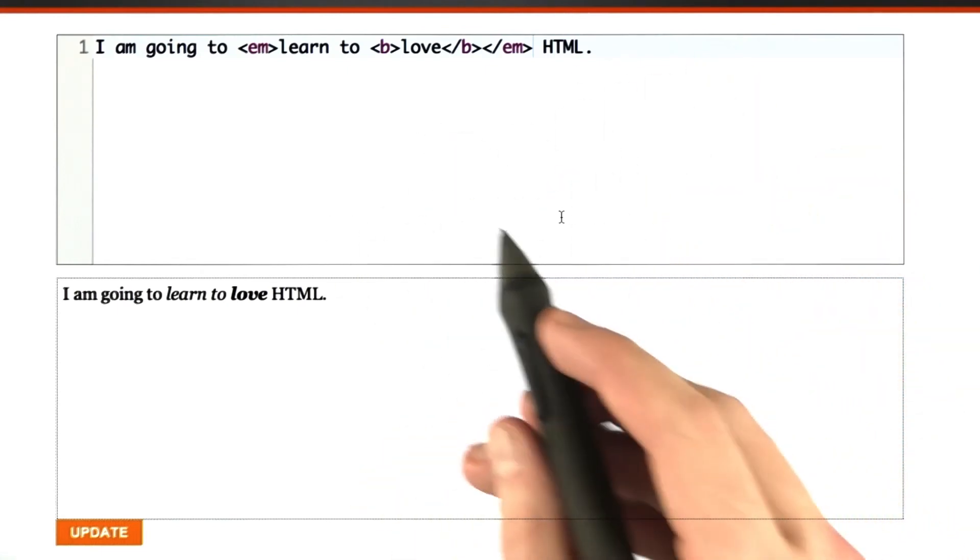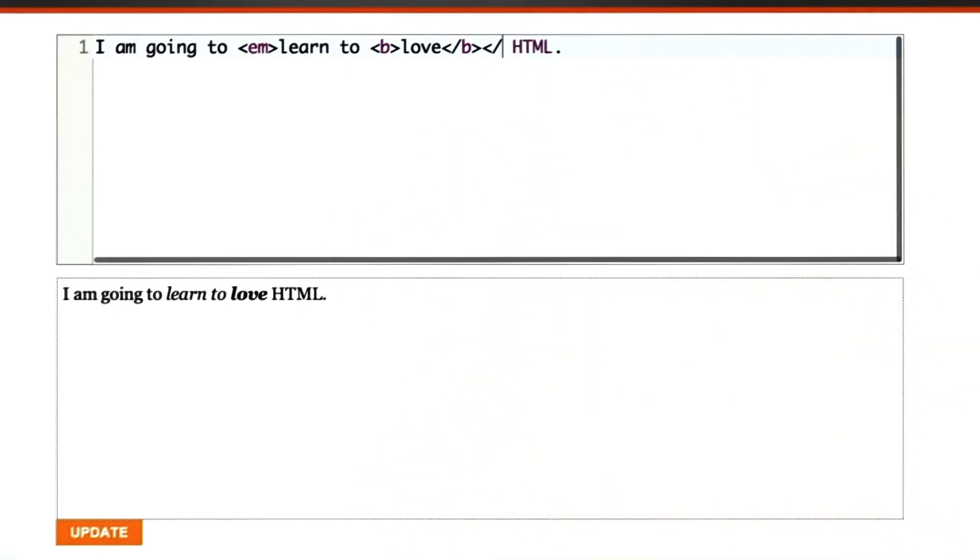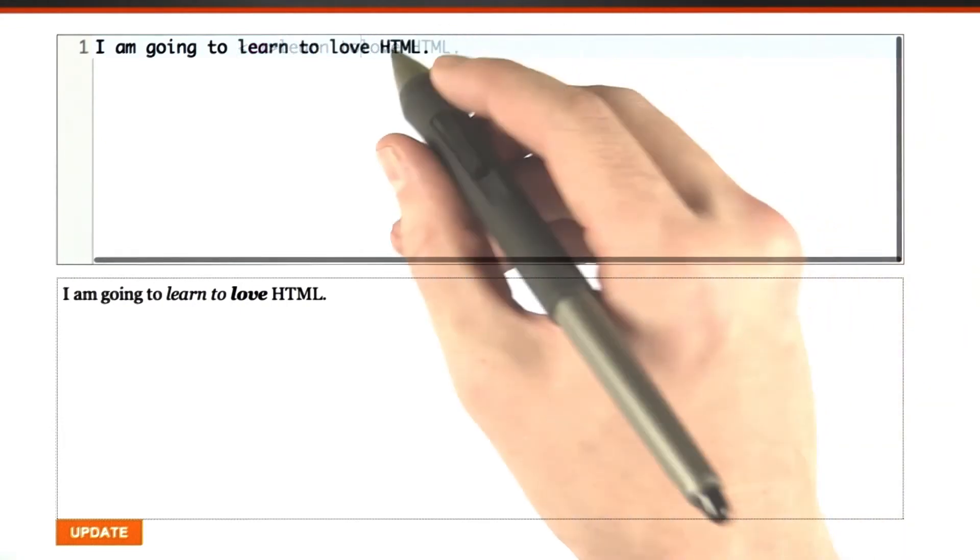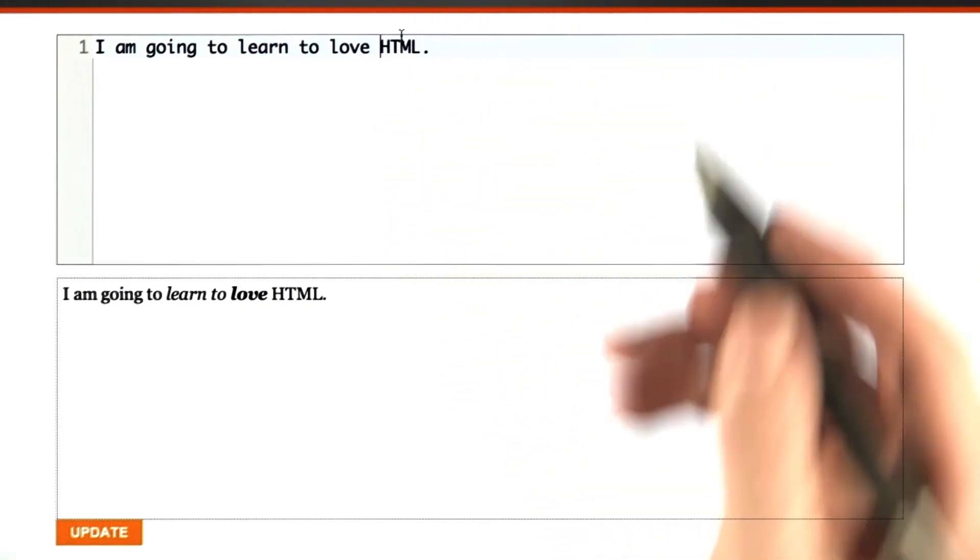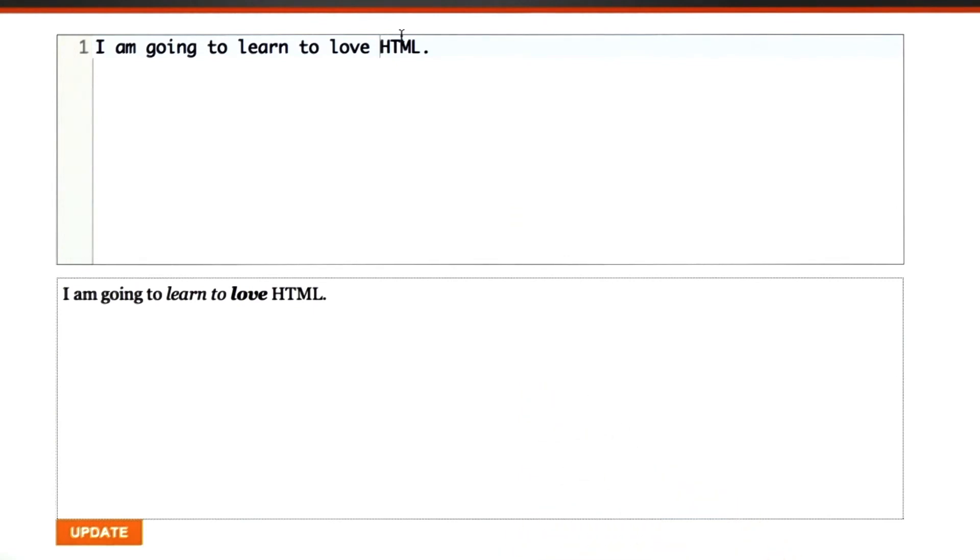Okay, so we've got our HTML from before. I'm going to clean out some of these tags here so we have a little bit more room to work. Let's make the words HTML here a link. So we're going to make an opening A tag, an href to www.w3c.org.html, and a closing A tag.